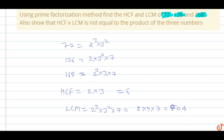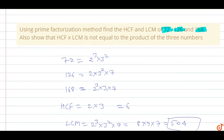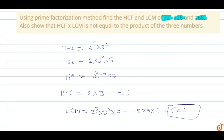The LCM equals 8 into 9 into 7, which is equal to 504. So this is the LCM and HCF of these three numbers by prime factorization. Now we have to prove that HCF into LCM is not equal to the product of the three numbers.